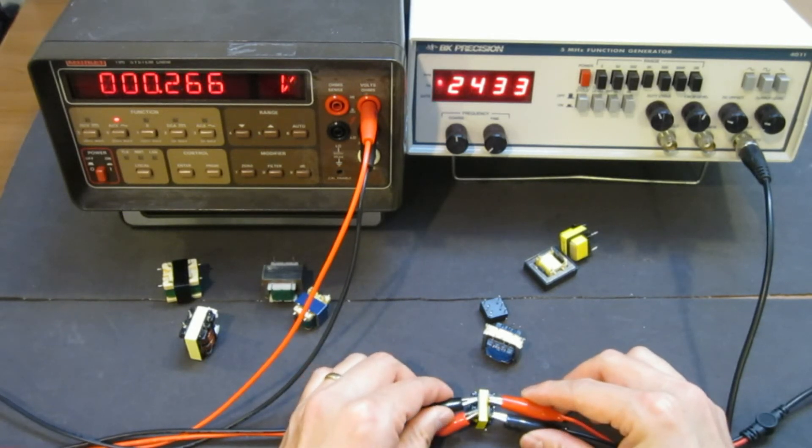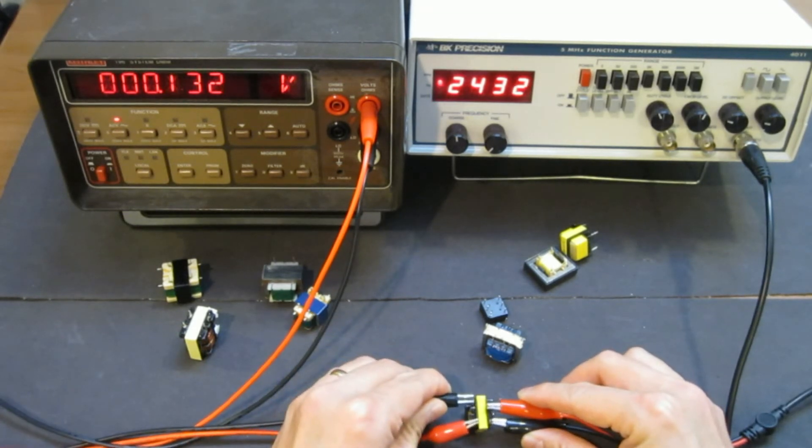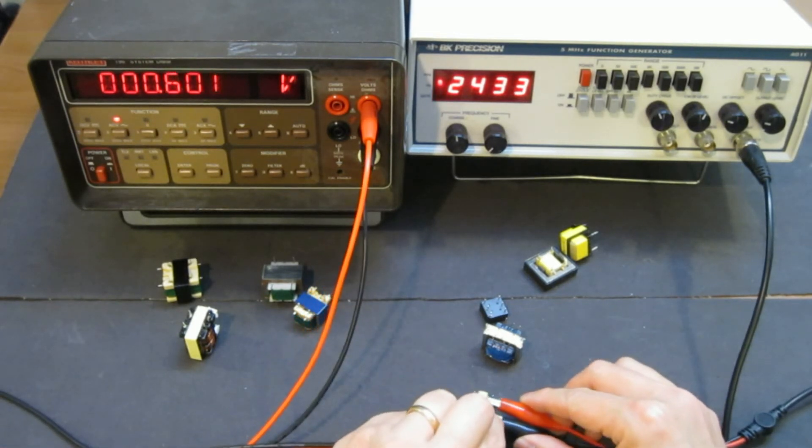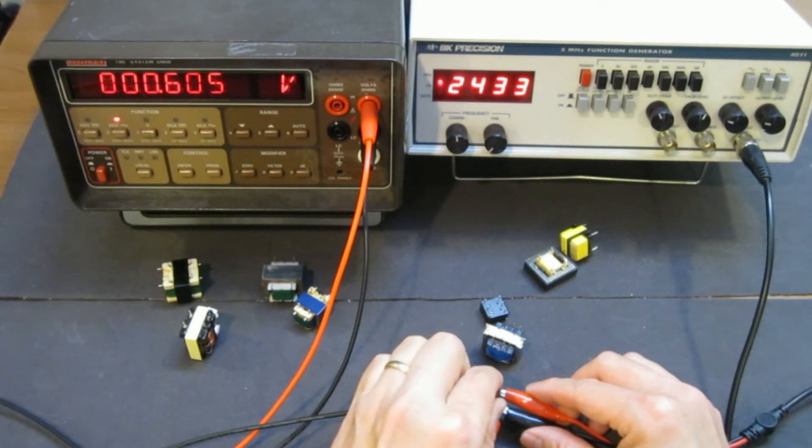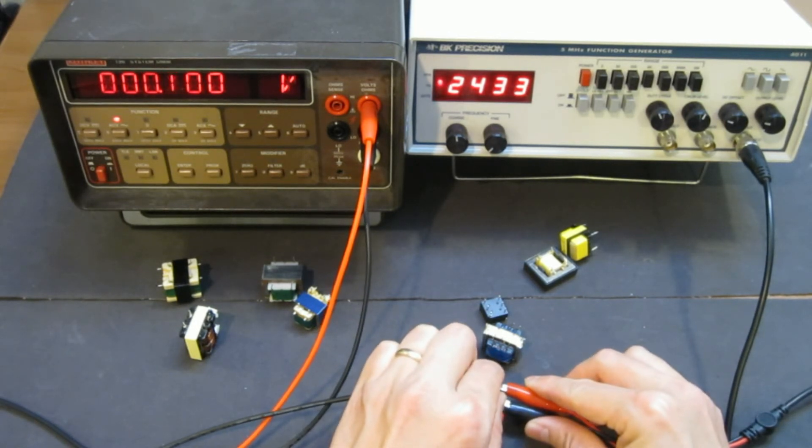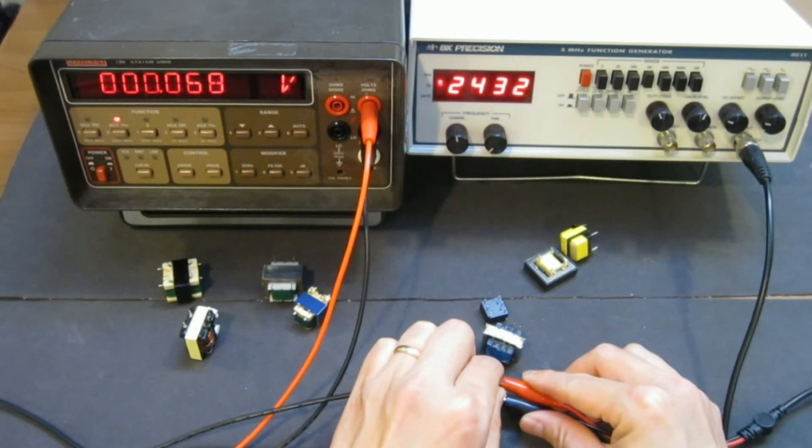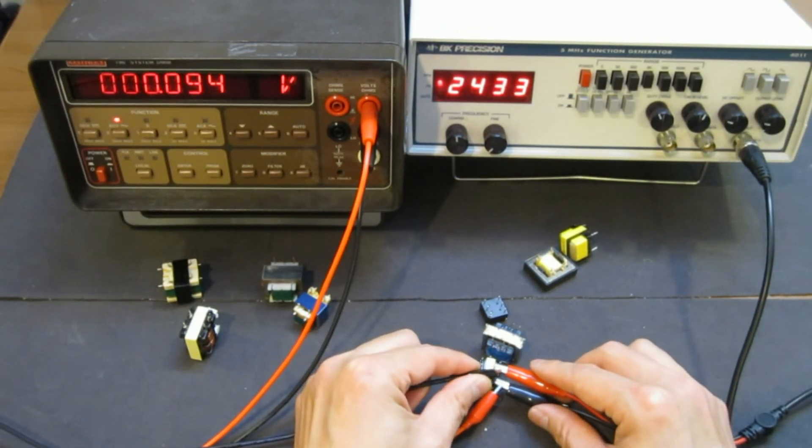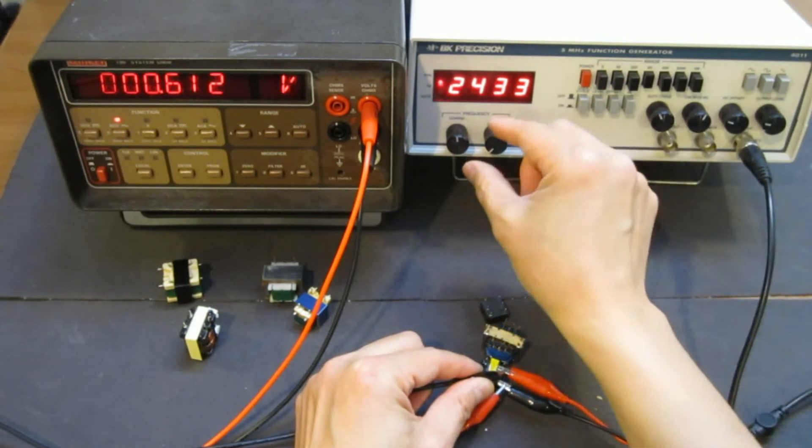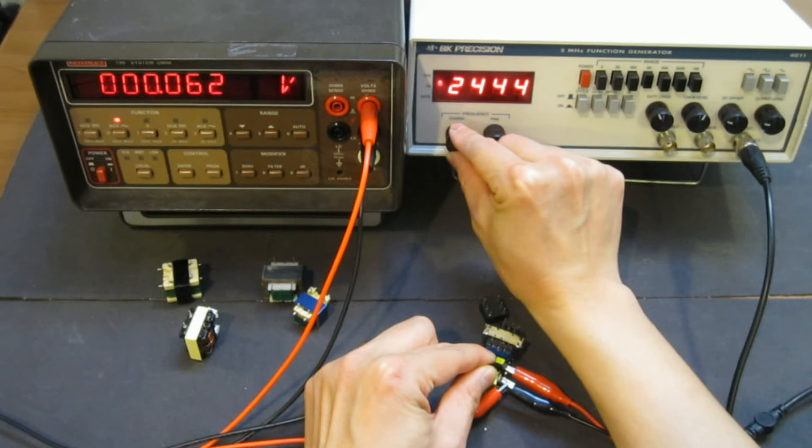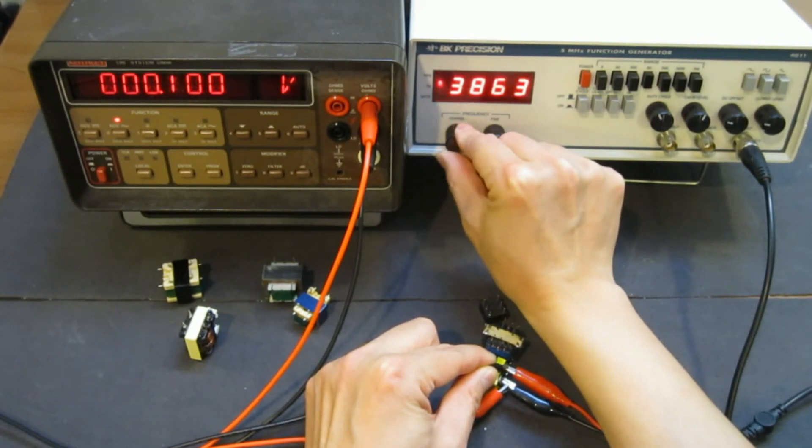So this is 0.2 volts, 0.1. So I suspect that the input is getting significantly loaded. Yeah, so as you can see that at the 2 kilohertz, the input of this little transformer is actually pretty much shorted. So we can increase the frequency. So by the way, let me just clip here. And, not a voltage, let's increase the frequency.